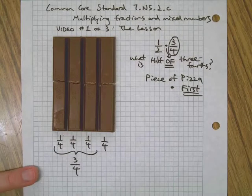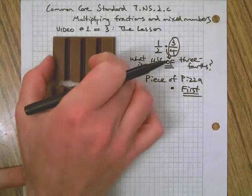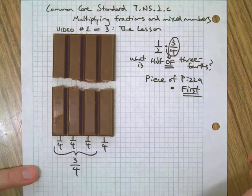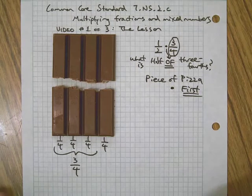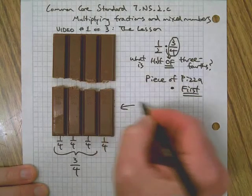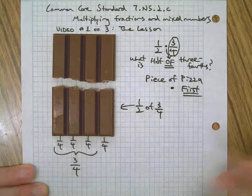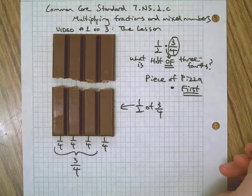There's our fourths. Here's three of them, 3/4. Good. Now if I want to take half of that, I'm gonna break it just like that. Notice the precision, precise break there. Here's one half of that.